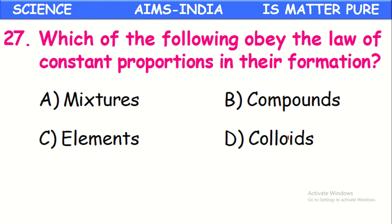Which of the following obeys the law of constant proportions in their formation? Compounds follow the law of constant proportions — a compound is formed with a fixed ratio of the elements in it. Mixtures do not follow this law. For example, in water, hydrogen and oxygen always combine in a 1:8 ratio — that ratio is always fixed for compounds.